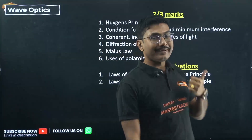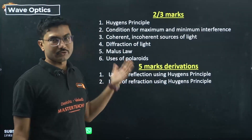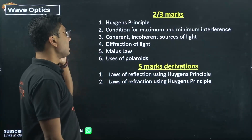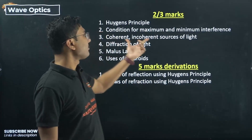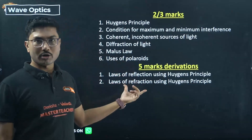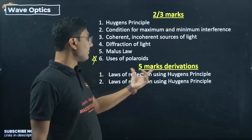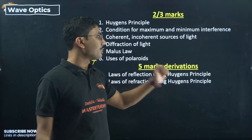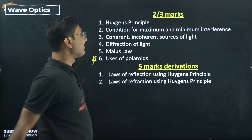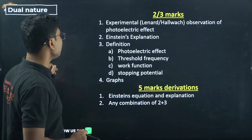Wave Optics: if Ray Optics gives a numerical, Wave Optics will give a 5-mark derivation, and vice versa. Key topics: Huygens' principle, condition for maximum and minimum interference, coherent and incoherent sources of light, diffraction of light, Malus's law, uses of polaroids. For 5-mark derivations: laws of reflection using Huygens' principle and laws of refraction using Huygens' principle — both must be practiced. The model question paper also includes the derivation for conditions of maximum and minimum interference.